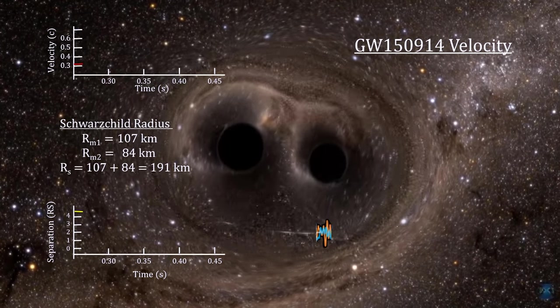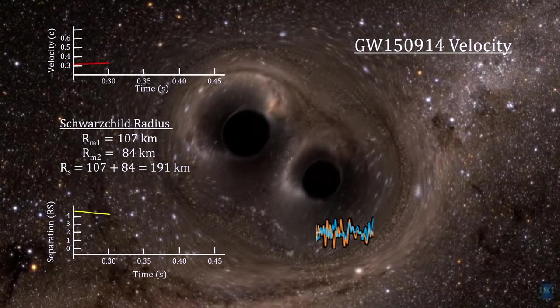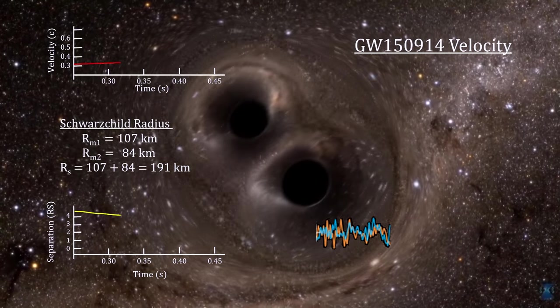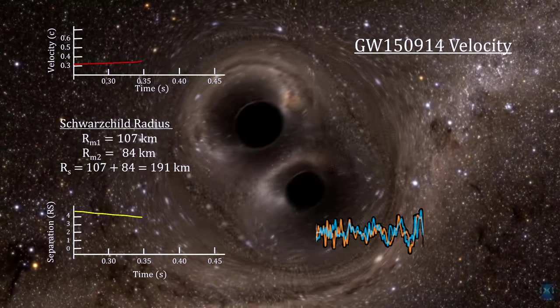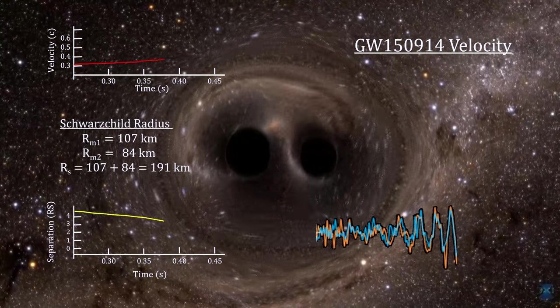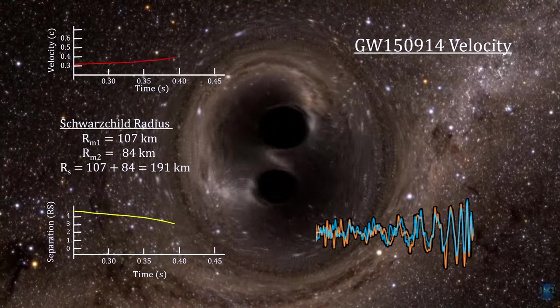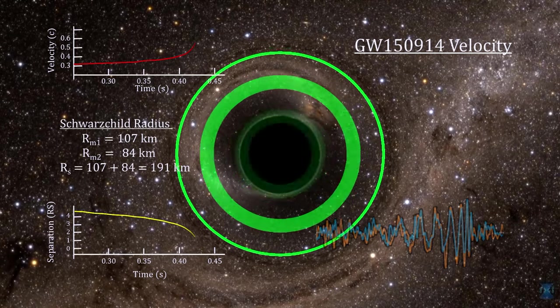During the last 200 milliseconds of their in-spiral, the orbiting velocity of the black holes increased from 30% the speed of light to 60% of the speed of light. Over the same period, the distance between the two black holes went from around 1,000 kilometers to just under 200 kilometers when their event horizons made contact.